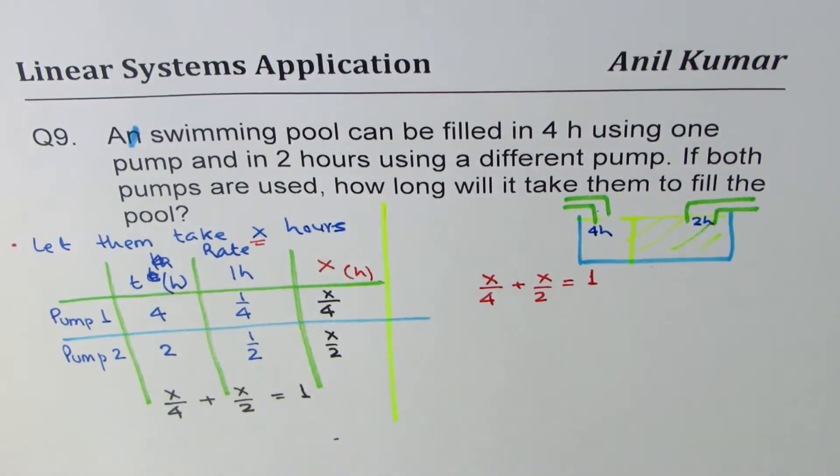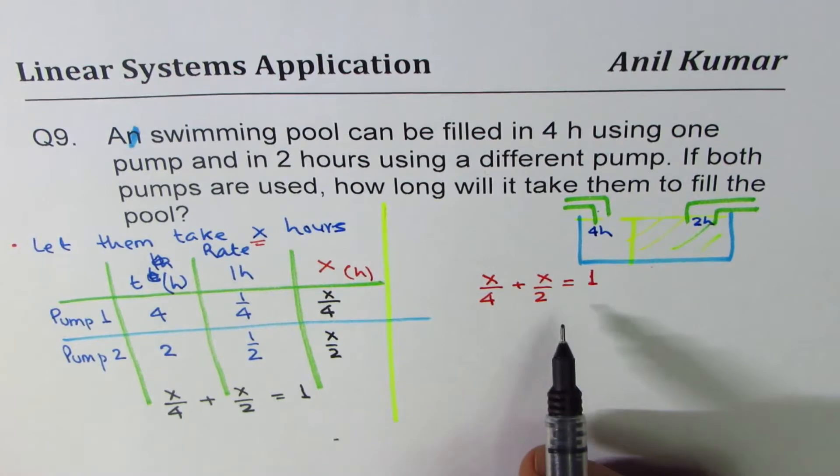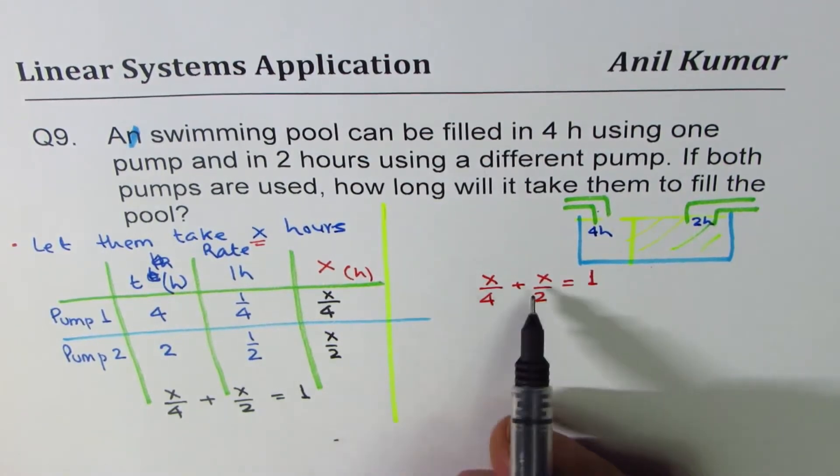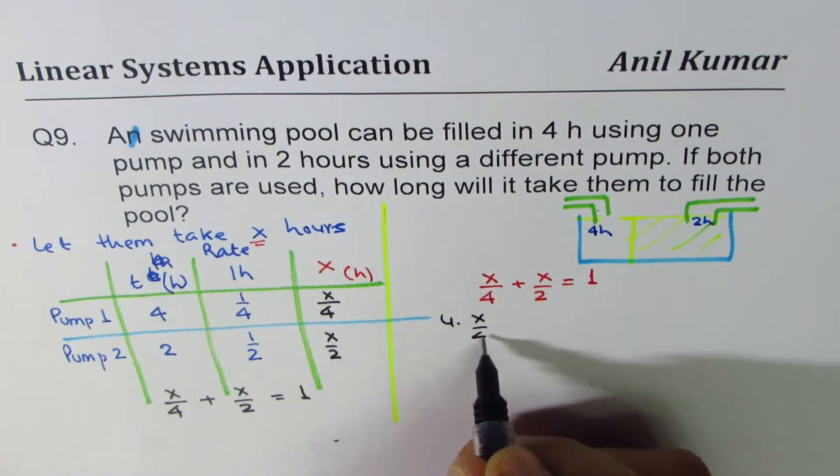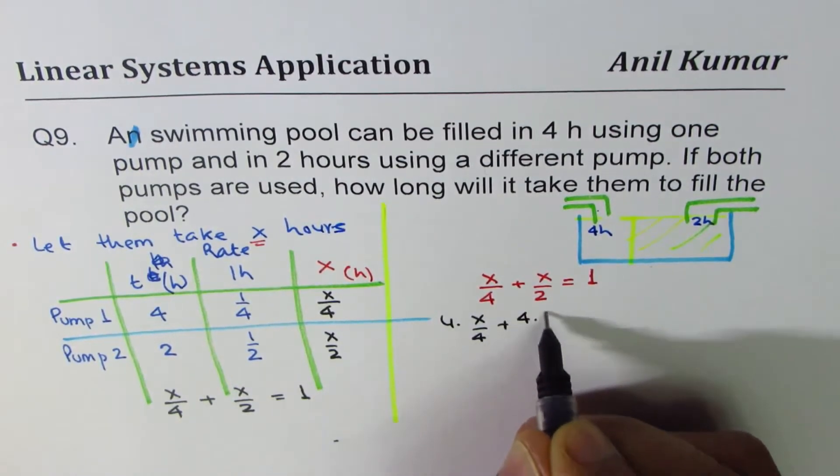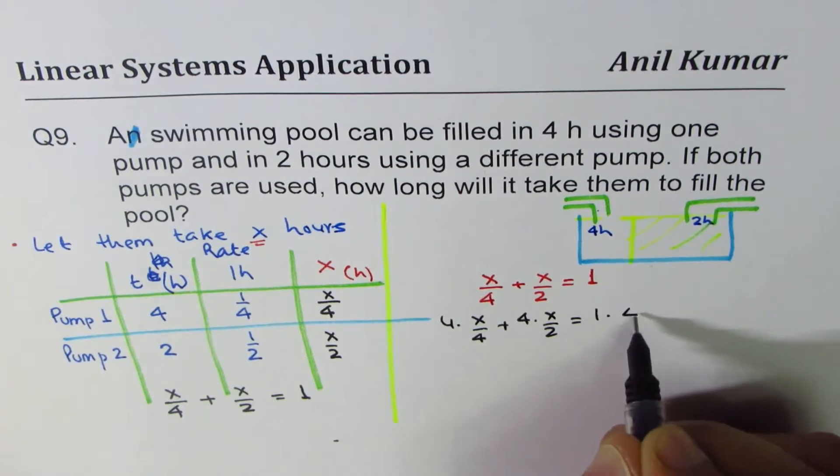So there is only one equation here. But to get to this equation is kind of tricky. But I hope you understood this strategy. Now, let's solve for X. To solve for X, we can multiply everything by four. So we can do four times X over four plus four times X over two plus one times four.